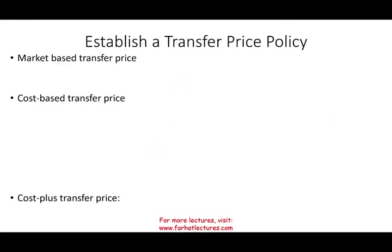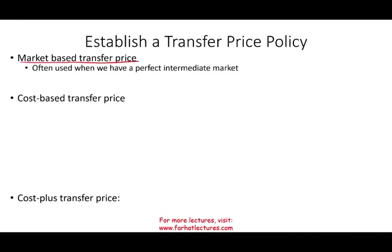The second method is establishing a transfer price policy. You set up a policy and say this is what we're going to follow. Under establishing a policy, you could establish a market-based or a cost-based transfer price policy. If there is a market price for the product you are selling, you use the market-based transfer price. It's often used when we have a perfect intermediate market.